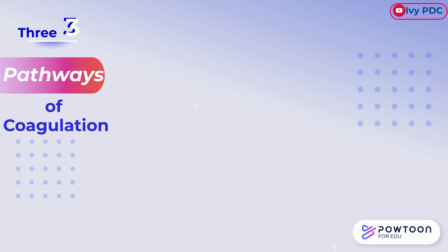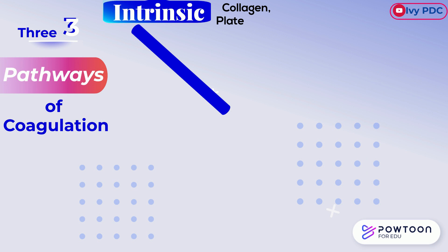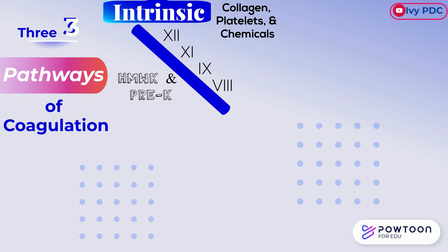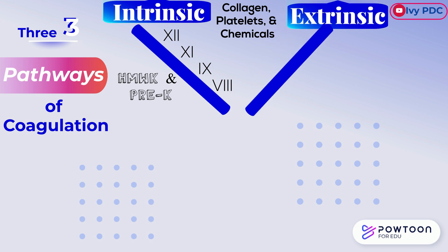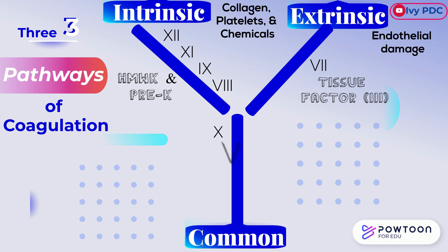Let's go over this again. The intrinsic pathway is activated by the exposure of collagen, platelets, and chemicals. The factors involved in the intrinsic pathway are 12, 11, 9, and 8, together with high molecular weight kininogen and pre-kallikrein. The extrinsic pathway is activated by endothelial damage, and the coagulation factor involved is number 7 with the help of tissue factor. The common pathway has the coagulation factors 10, 5, 2, 1, and 13.